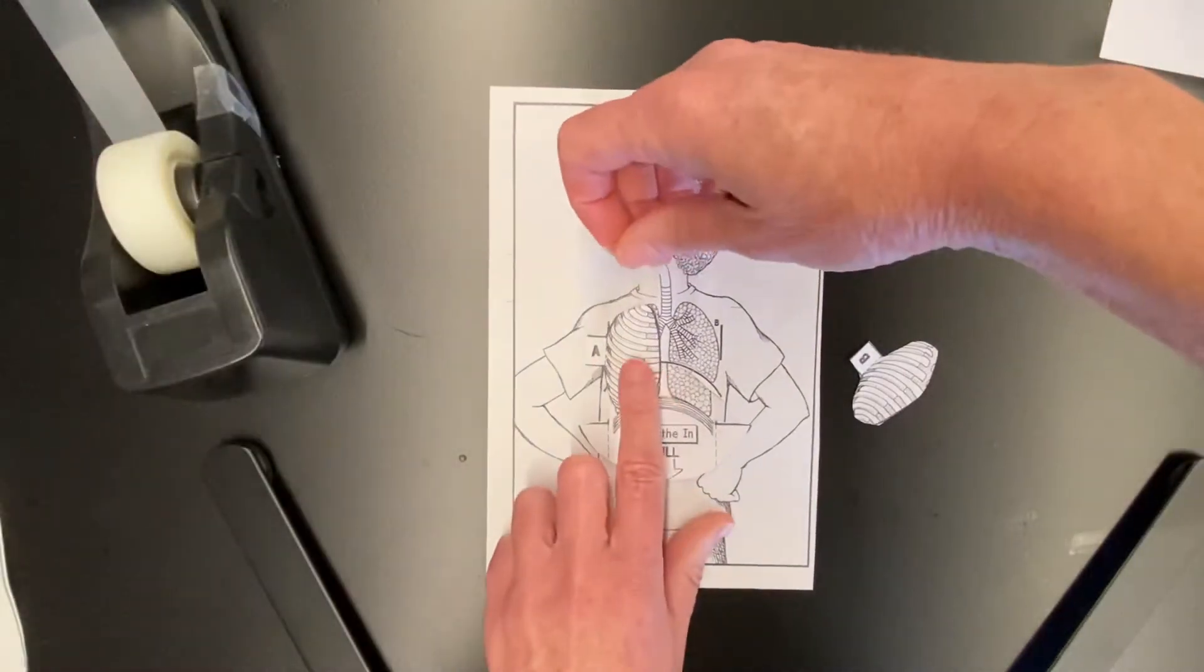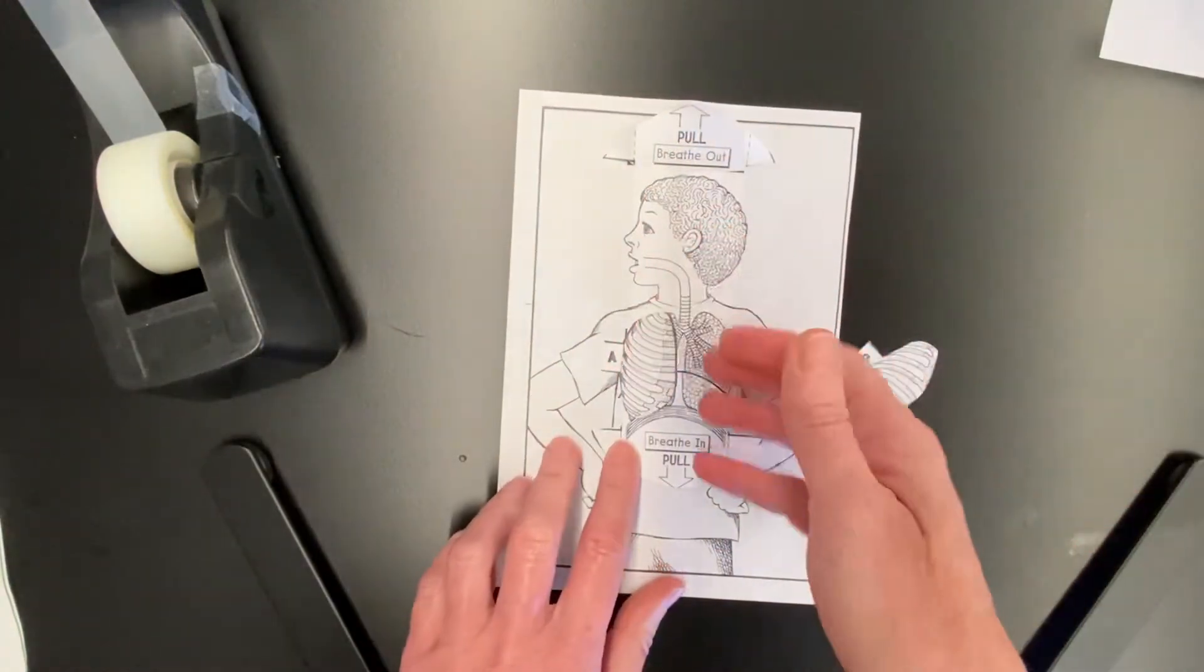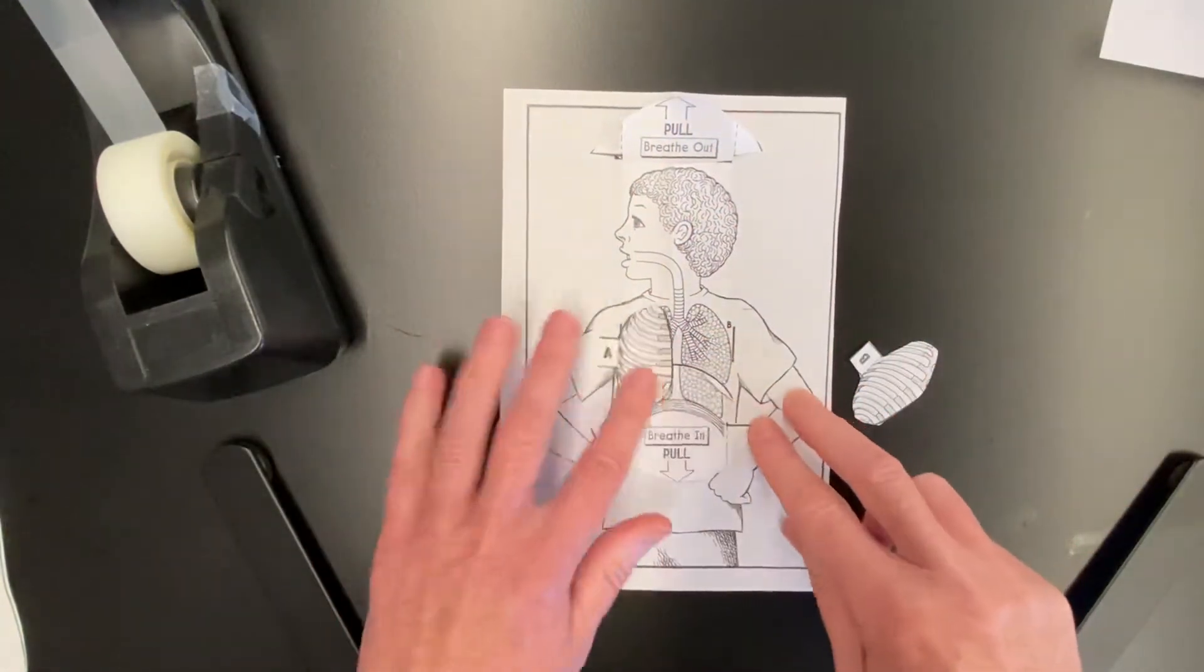I put a little piece just on the tab of the A, like that, so I can open it up like a little window or door.